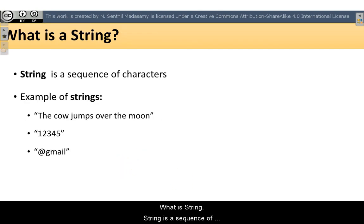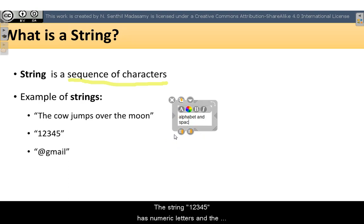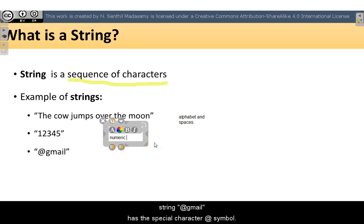What is string? String is a sequence of characters. The example of strings: the cow jumps over the moon, which has the characters of alphabet and spaces. The string 12345 has the numeric letters, and the string at gmail has the special character at symbol.